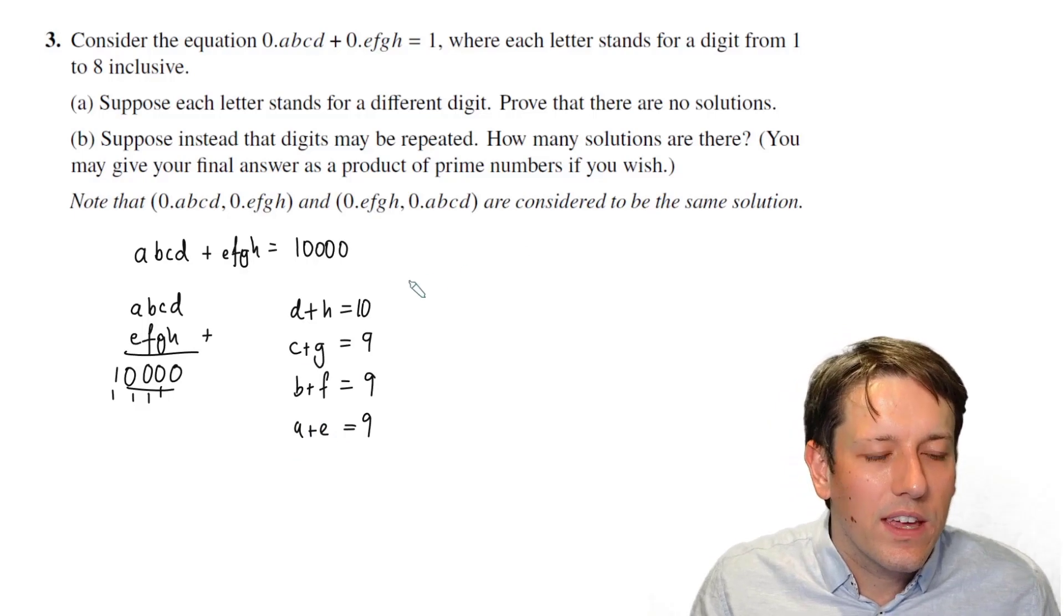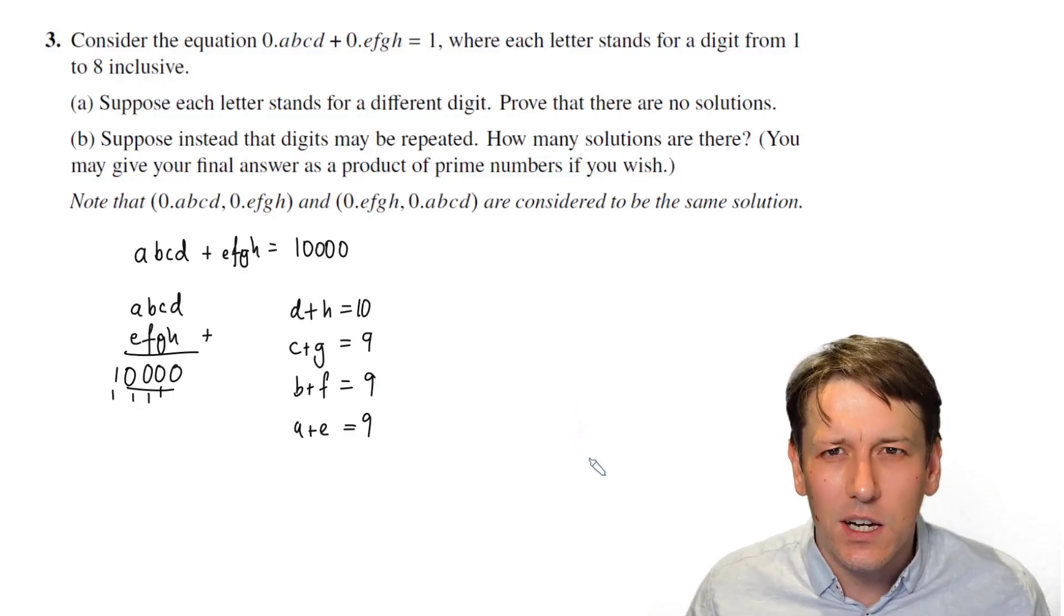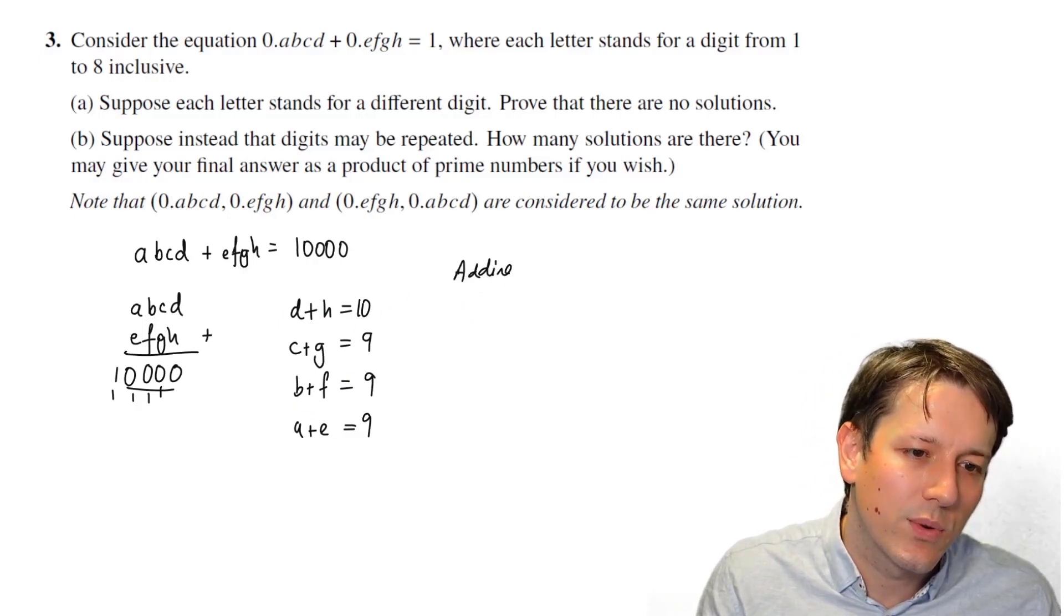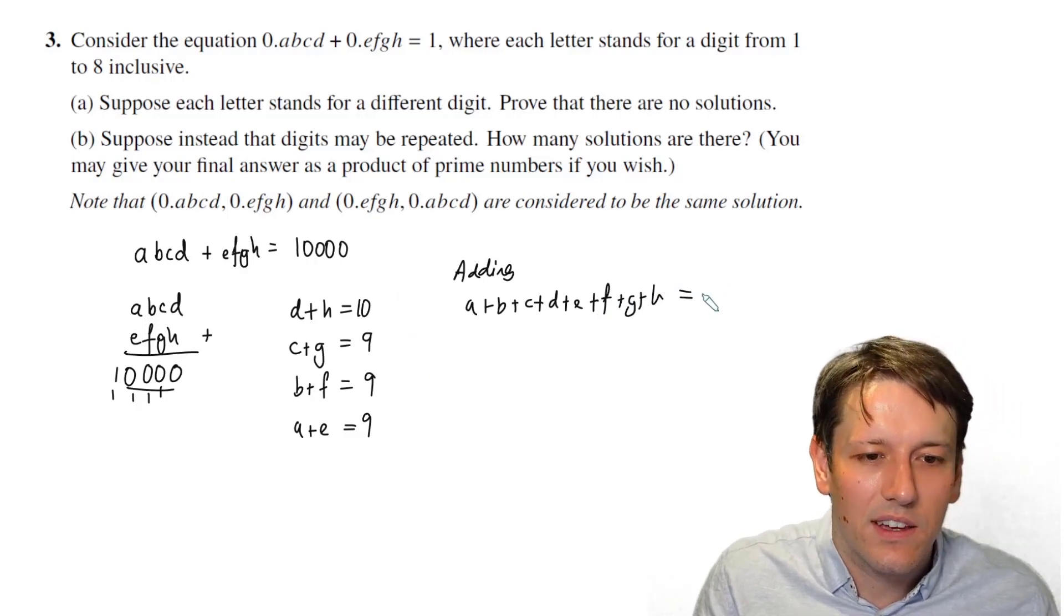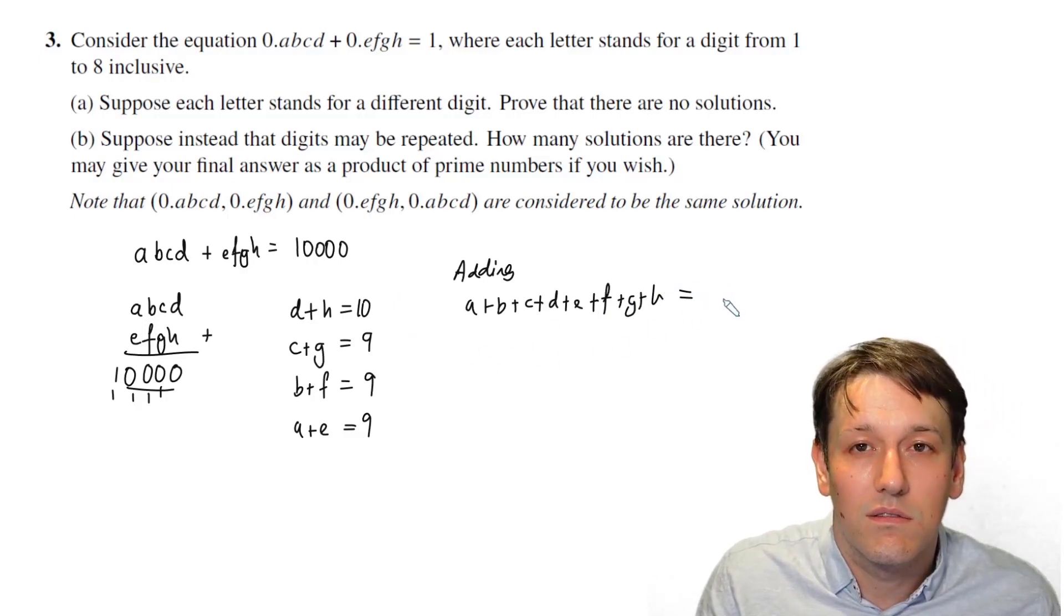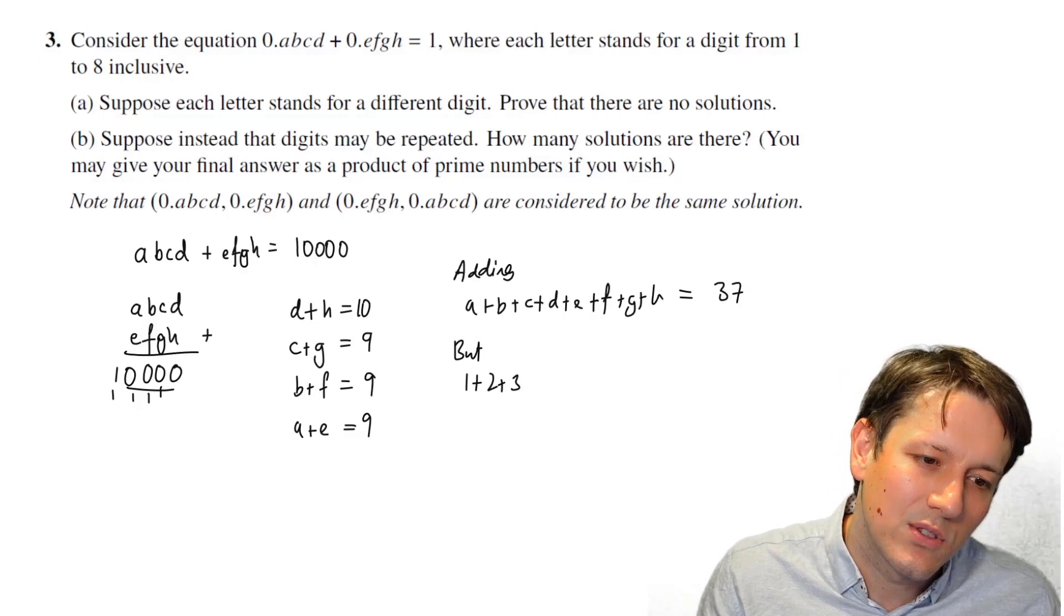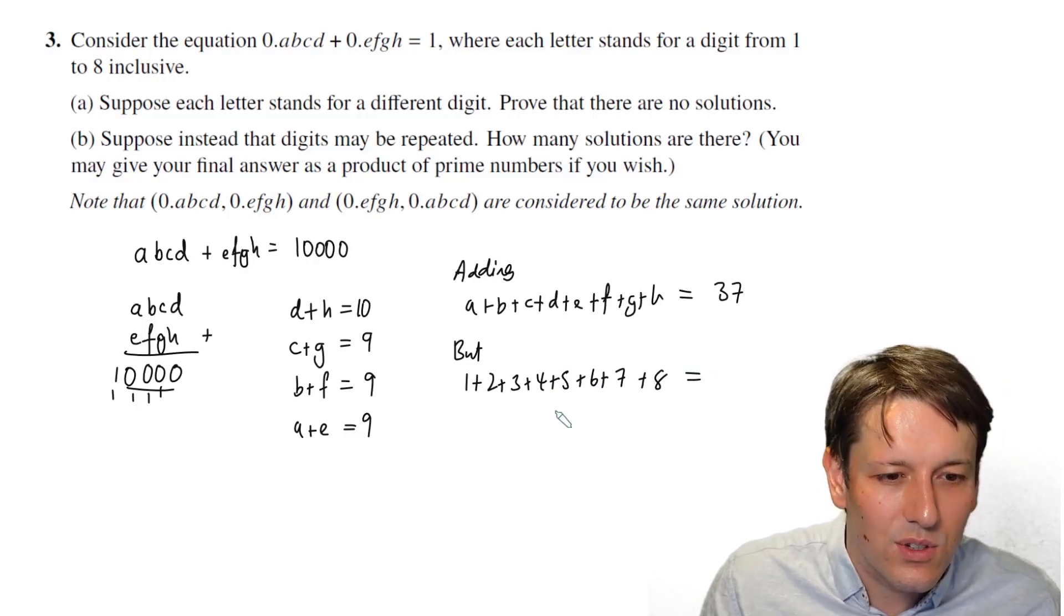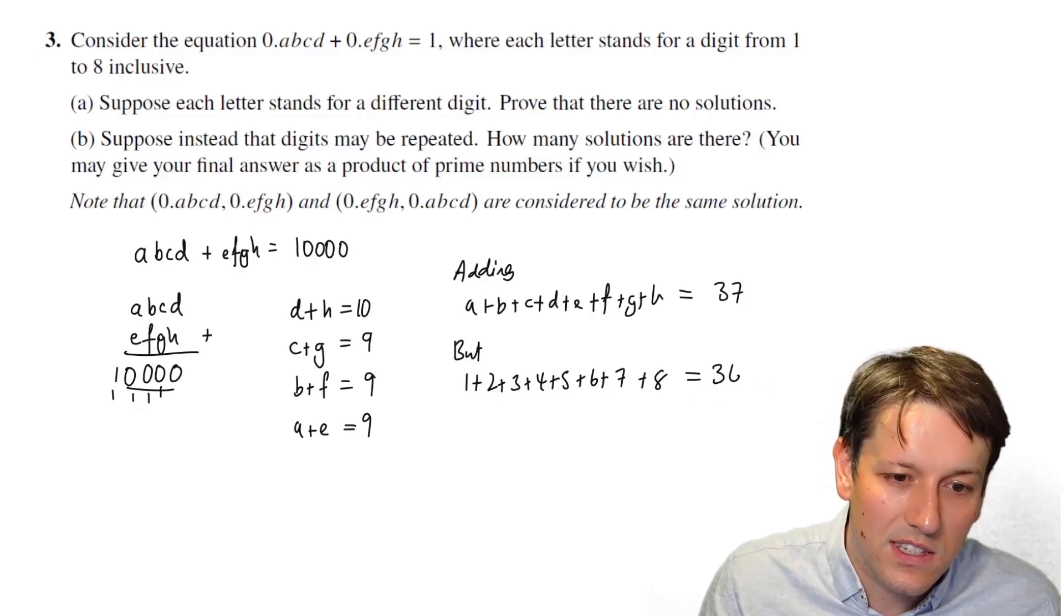And now, when I think about the fact that A, B, C, D, E, F, G, and H all have to be between 1 and 8, there's a couple of ways of showing this. If I just add all these equations together, what do I get? I get A plus B plus C plus D plus E plus F plus G plus H, add them all together, and 10 plus 27 is 37. But if I add 1 plus 2 plus 3 plus 4 plus 5 plus 6 plus 7 plus 8, you see we get 36.